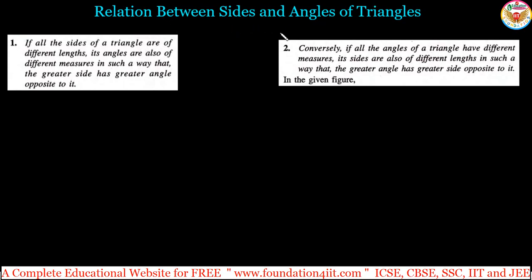We are looking at the relation between sides and angles of triangles. There are four basic important properties I will explain here. The first one: if all the sides of a triangle are of different lengths, its angles are also of different measures, in such a way that the greater side has the greater opposite angle.